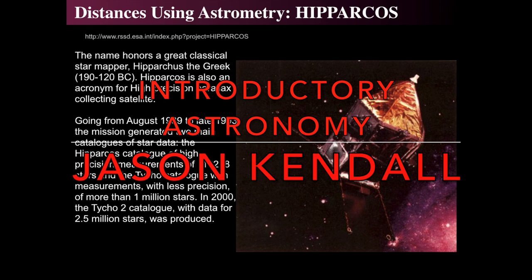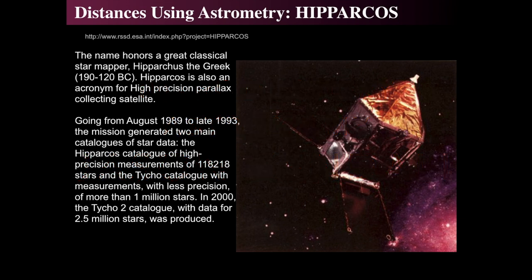Distances were first introduced to us with parallax, and the Hipparcos mission, which ran in the early 1990s, generated an enormous list of parallaxes to nearby stars — roughly about a million with really good precision and about 2.5 million with poor precision. The highest precision measurements are approximately 100,000 or so stars, and parallax was incredibly important for this. The Hipparcos satellite changed astrophysics when it did it.